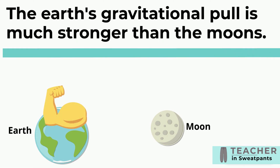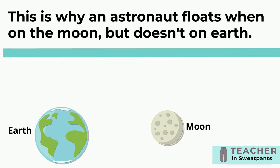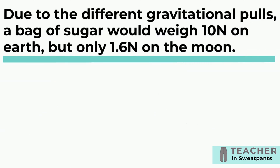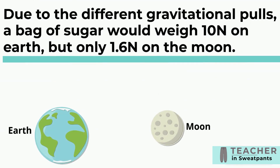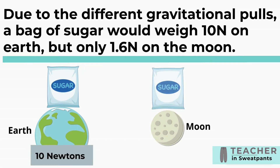The Earth's gravitational pull is much stronger than the Moon's. This is why an astronaut floats when on the Moon but doesn't on Earth. Due to the different gravitational pulls, a bag of sugar would weigh 10 newtons on Earth but only 1.6 newtons on the Moon.